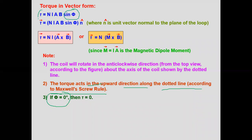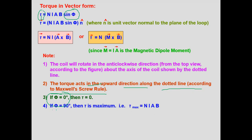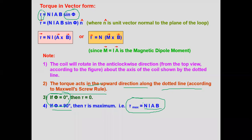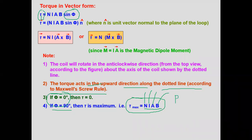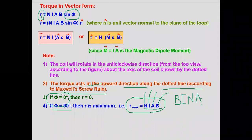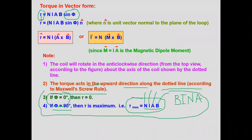Third point: if φ = 0, then torque = 0. Putting φ = 0 in the equation gives zero torque. If φ = 90°, torque is maximum, and the maximum torque value is τ_max = NIAB, where N is number of turns, I is current, A is area of coil, and B is magnetic field. You can remember it as NIAB or BINA. Questions based on these two conditions are asked very frequently in exams.